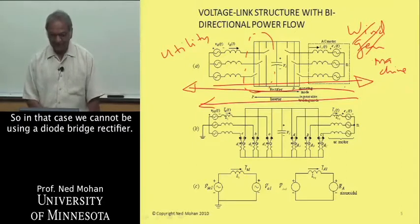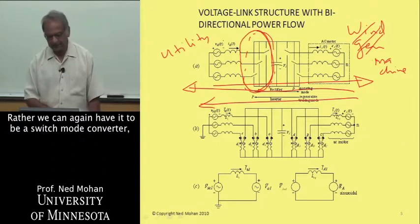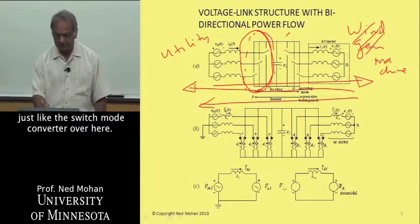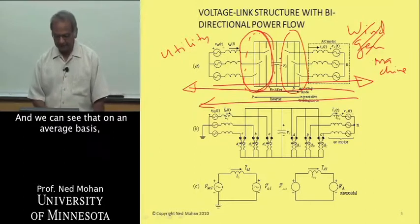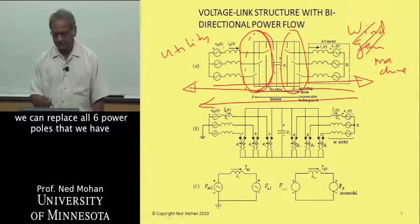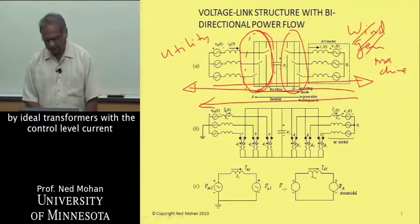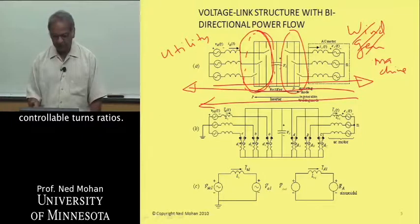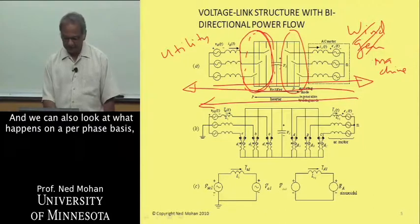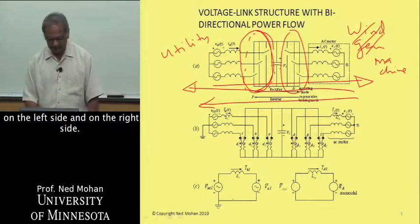In that case, we cannot be using a diode bridge rectifier. Rather, we can again have it to be a switch mode converter, just like the switch mode converter over here. You can see that on an average basis, we can replace all six power poles that we have by ideal transformers with their controllable turns ratios, depending upon the duty ratio of operation.